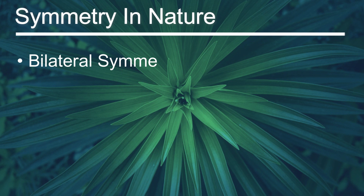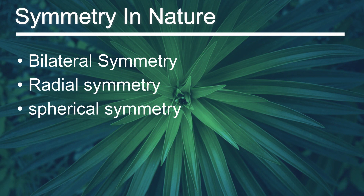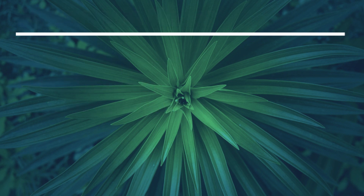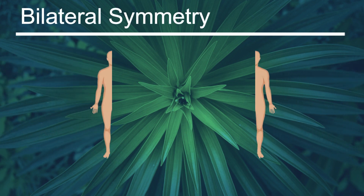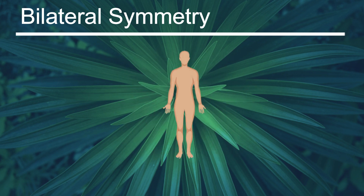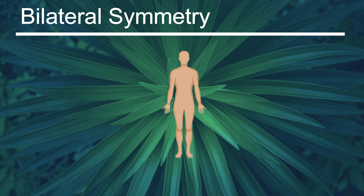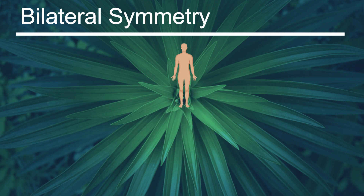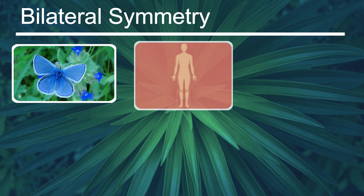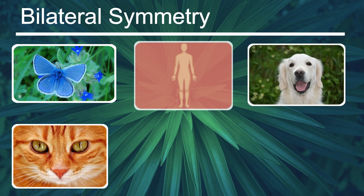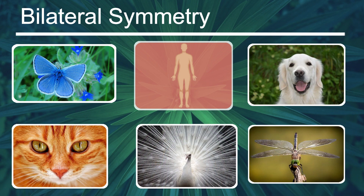In nature, there are mainly three classifications of symmetry found in living organisms. The first is bilateral symmetry. The left and right sides of the human body are symmetrical. The transformation used is reflection by an imaginary mirror that slices vertically through the human body. Humans are not the only bilaterally symmetrical organisms — many other animals like butterflies, dogs, cats, birds, and insects also have this kind of symmetry.